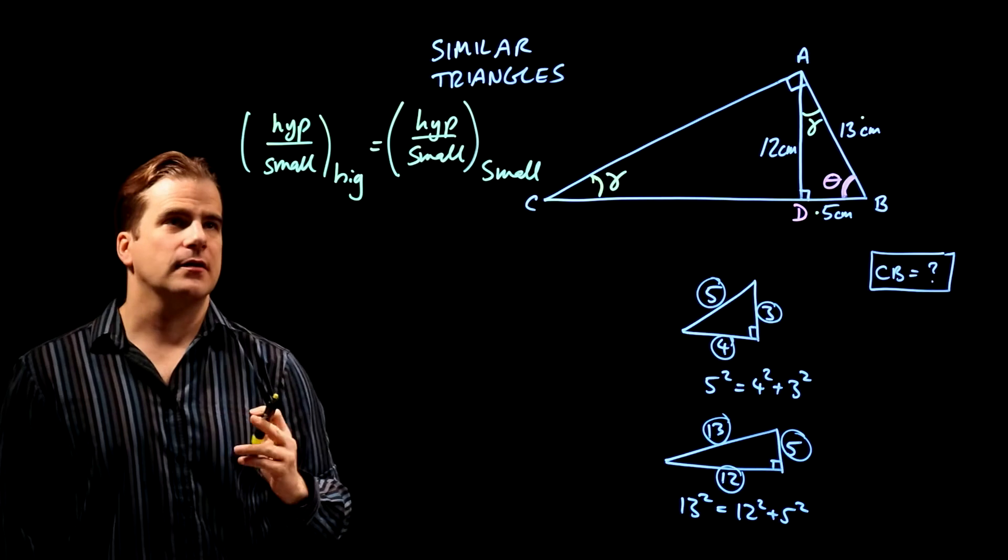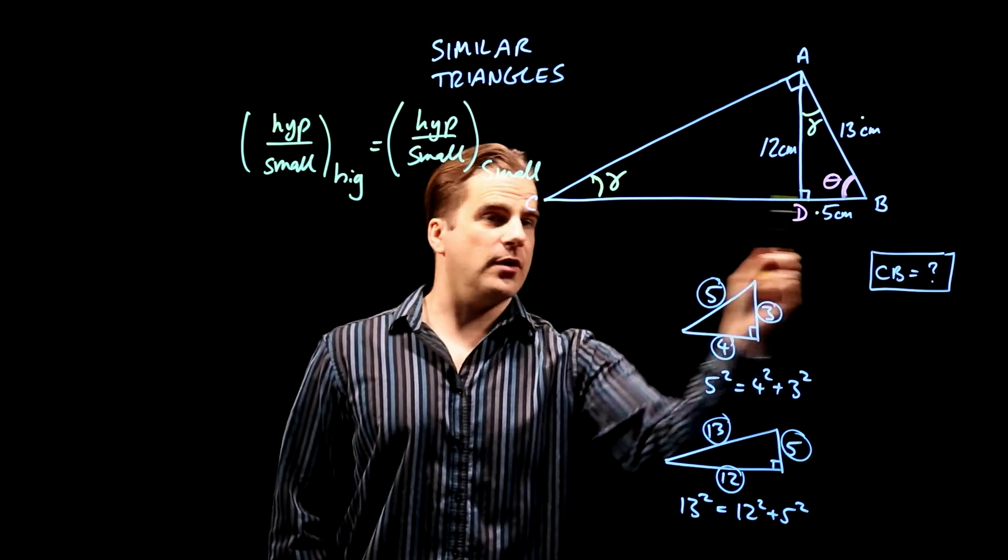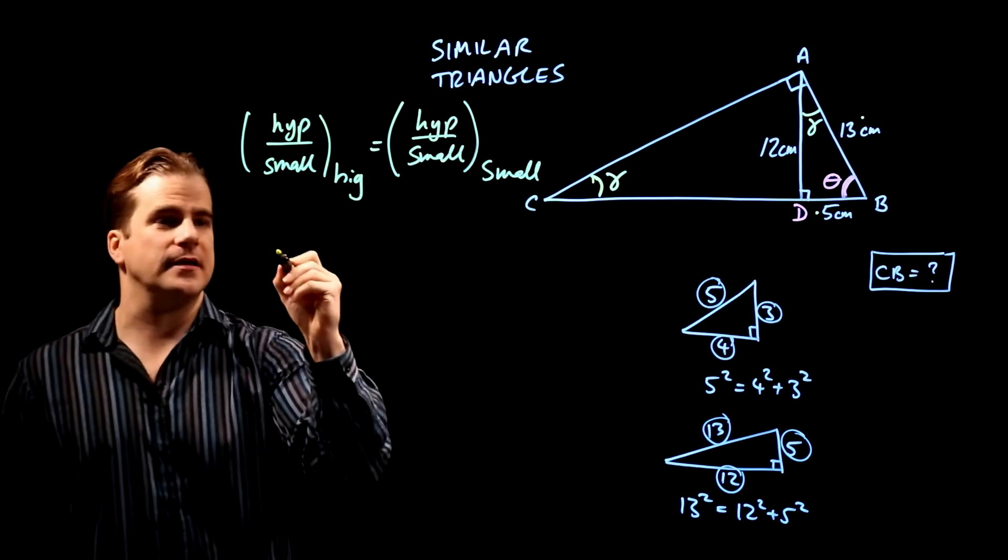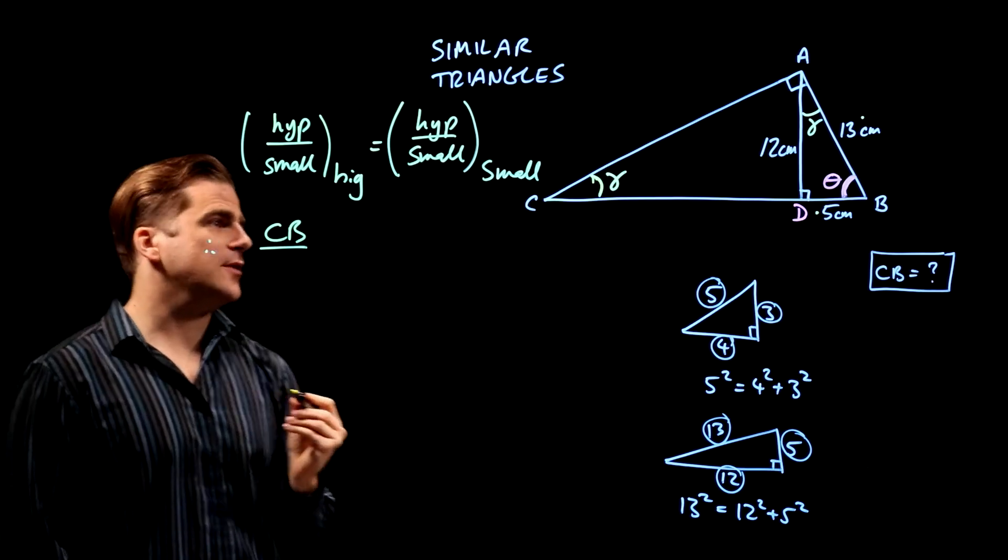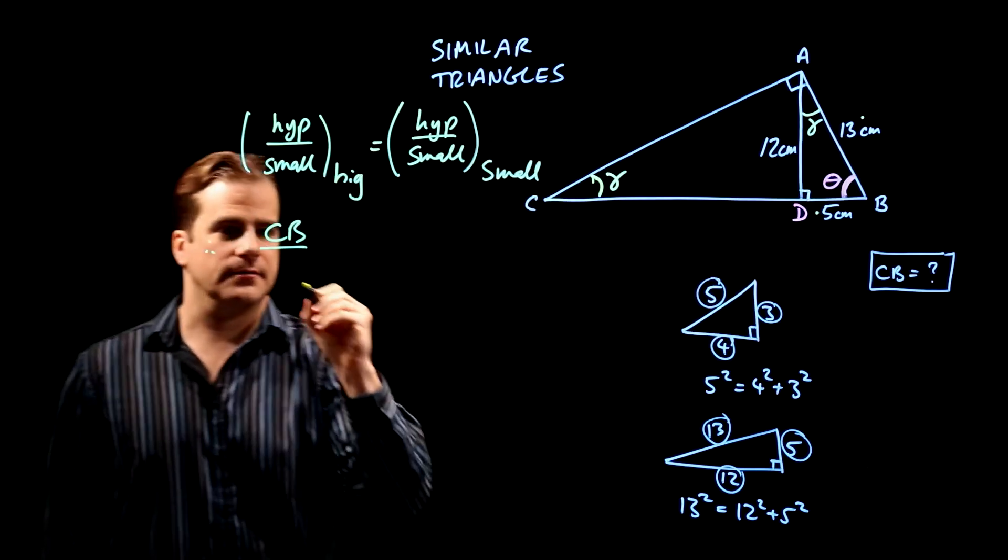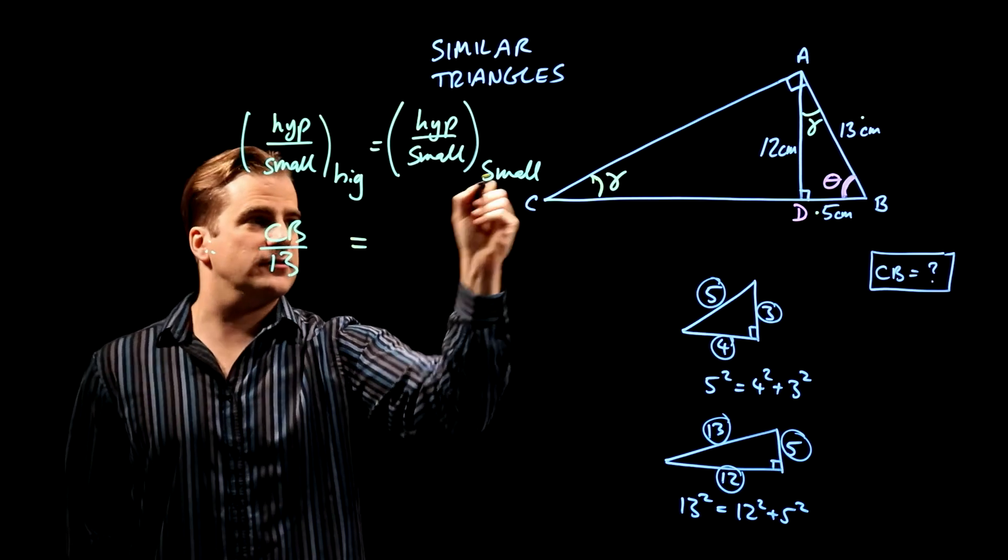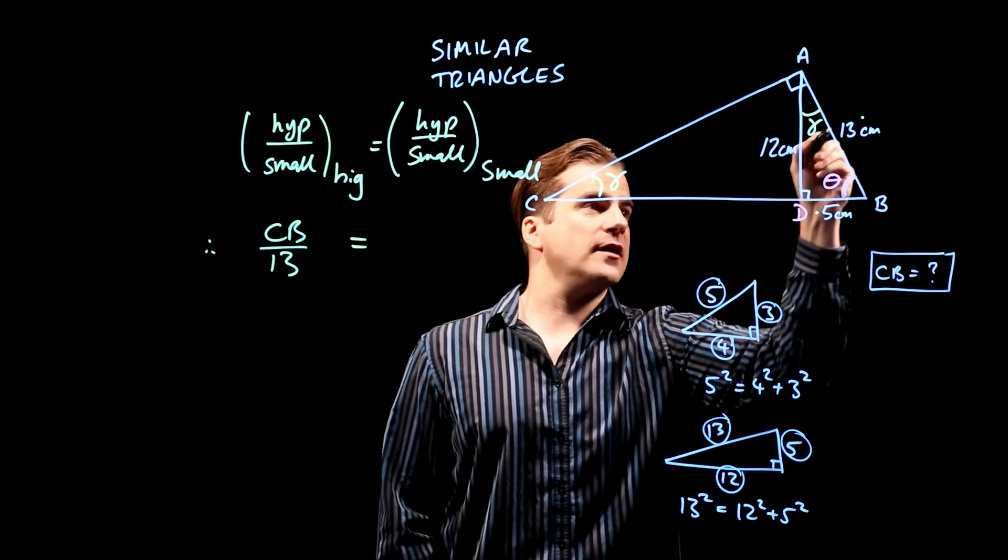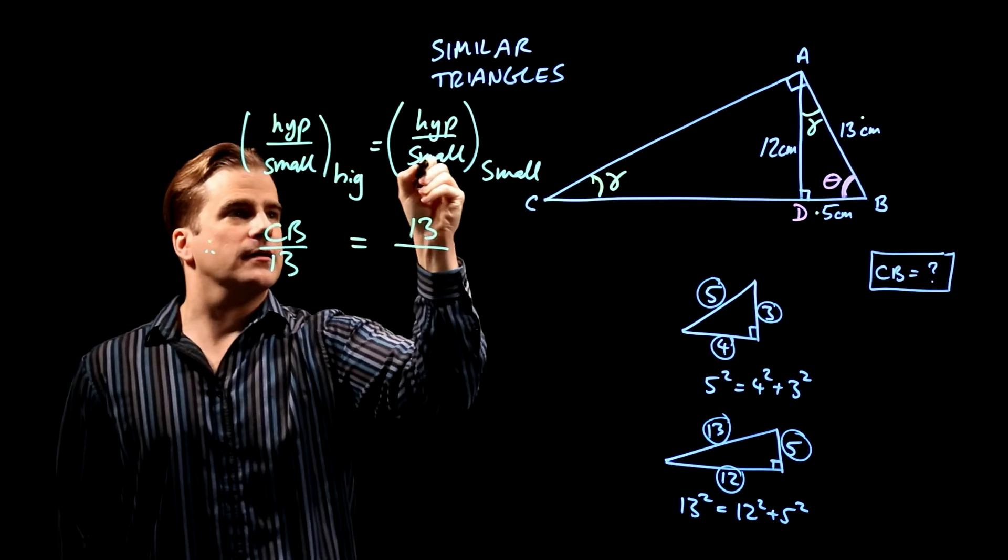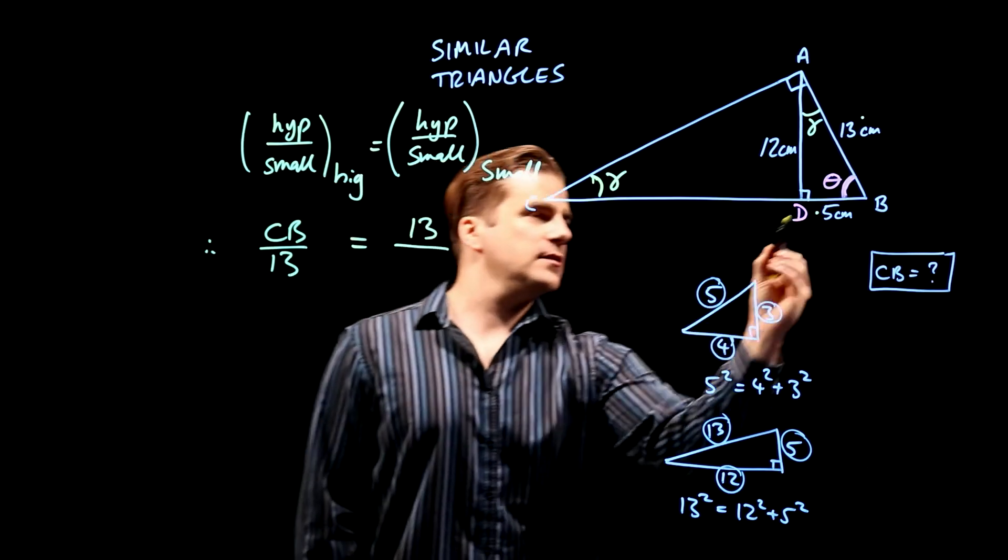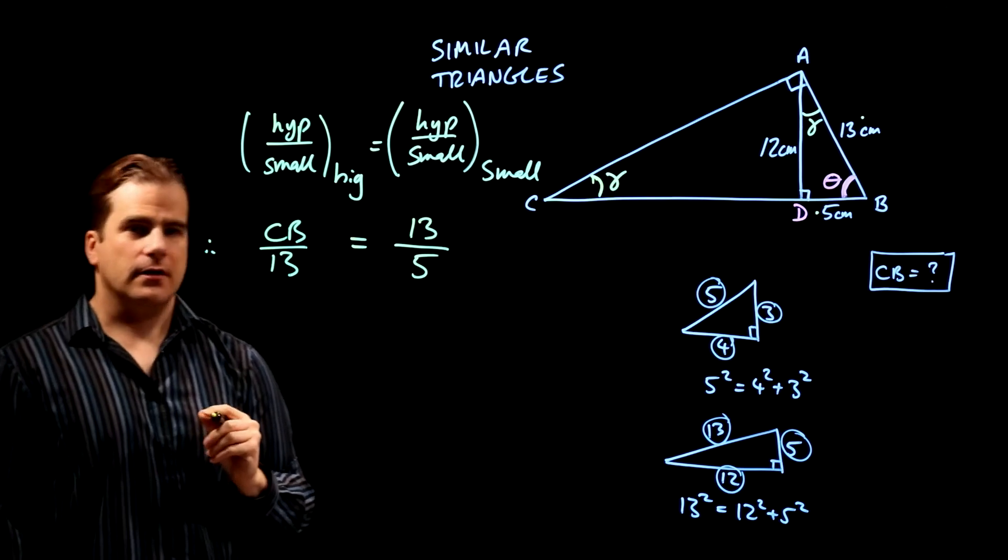Just put in the numbers. What's the hypotenuse of the big triangle? That's what we want. It's CB. So therefore, CB over small side of the big triangle is 13. Equals hypotenuse of the small triangle. Hypotenuse of the small triangle is 13. The small side of the small triangle is 5.